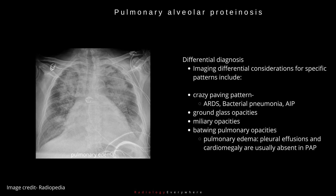Differential diagnosis: imaging differential considerations for specific patterns include, for the crazy paving pattern — ARDS, bacterial pneumonia, and acute interstitial pneumonia. Ground glass opacities and miliary opacities are also in the differential. For batwing pulmonary opacities, note that pulmonary edema, pleural effusions, and cardiomegaly are usually absent in PAP.